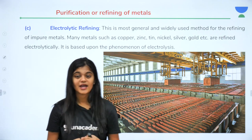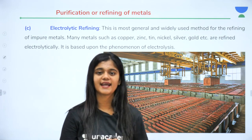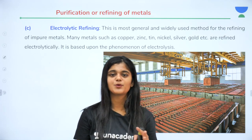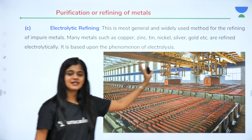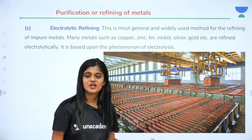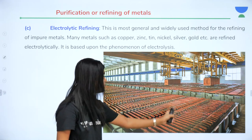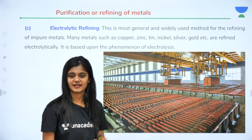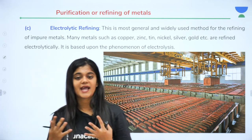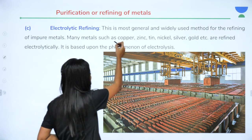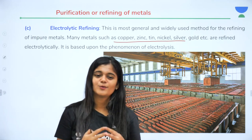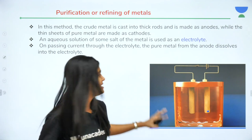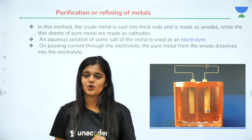The third and very important purification technique is electrolytic refining, which is widely used. In this process, electrolysis is used to purify metals. Copper refining is a key example — this is done in factories where impure copper is refined using electrolytic refining. Metals such as copper, zinc, tin, nickel, gold, and silver can all be refined using this technique. The electrolysis setup requires two electrodes.